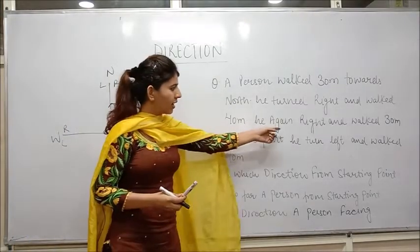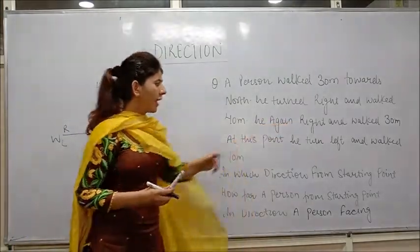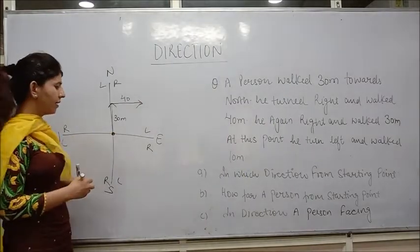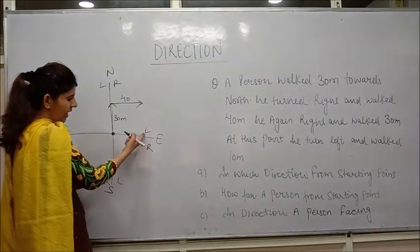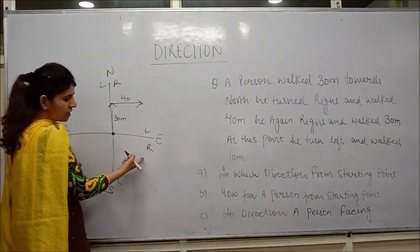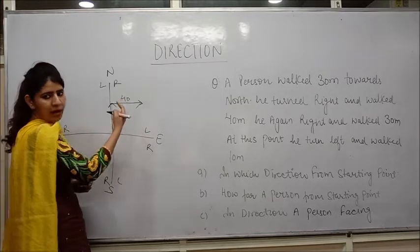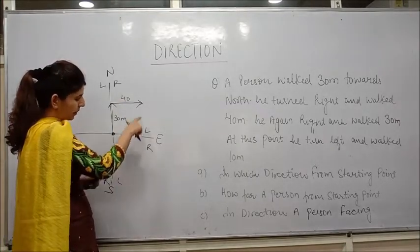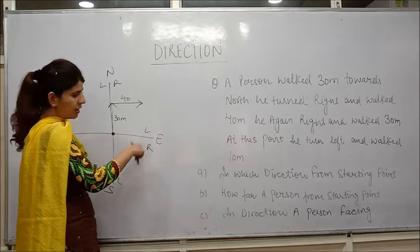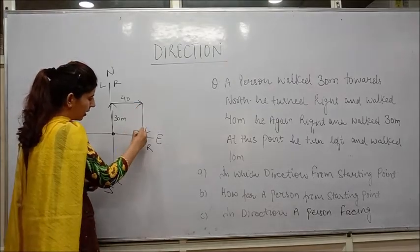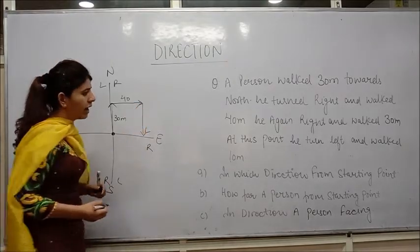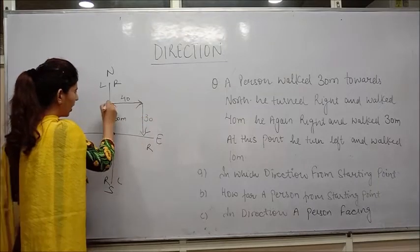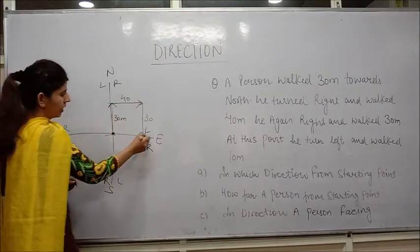Now he again turned right. From the east direction, he again turned right. In the east direction, right is towards downward and left is upward. The person turned right, so now the person moves towards downward and walked 30 meters, so here is also 30 meters.